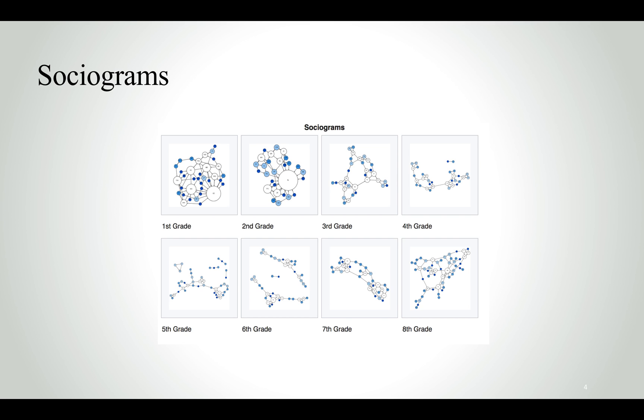This was basically a graph which could be used to describe the relationships between individuals. Research had been conducted in schools and different grades, and you could see how the kids would form different cliques and groups of friends.